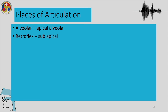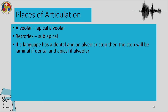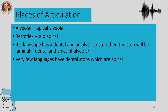The alveolar can be apical alveolar; the retroflex can be sub-apical. One important distinction to understand is that if a language has a dental and alveolar contrast, very often the dental sound will be laminal and the alveolar will be apical. Very few languages have dental stops which are apical — most of the time the gesture for dental sounds is apical, while the gesture for alveolar sounds would be laminal.